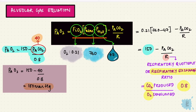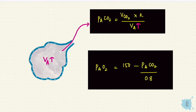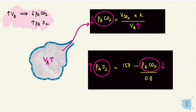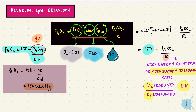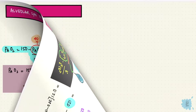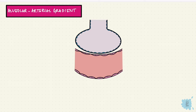When alveolar ventilation increases, alveolar carbon dioxide comes down and alveolar oxygen increases. The equation on its own isn't used much, but what is used is the alveolar-arterial gradient — the difference between alveolar oxygen and arterial oxygen. It checks diffusion of oxygen from the alveoli into the pulmonary capillaries and whether there is equilibration.